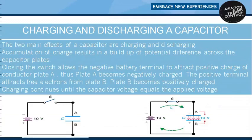The main effects of a capacitor are charging and discharging. Accumulation of charge results in a build-up of potential difference across the capacitor plates. Closing the switch allows the negative battery terminal to attract positive charge of conductor plate A, so plate A becomes negatively charged. Whereas the positive terminal attracts free electrons from plate B, and plate B becomes positively charged. Charging continues until the capacitor voltage equals the applied voltage.